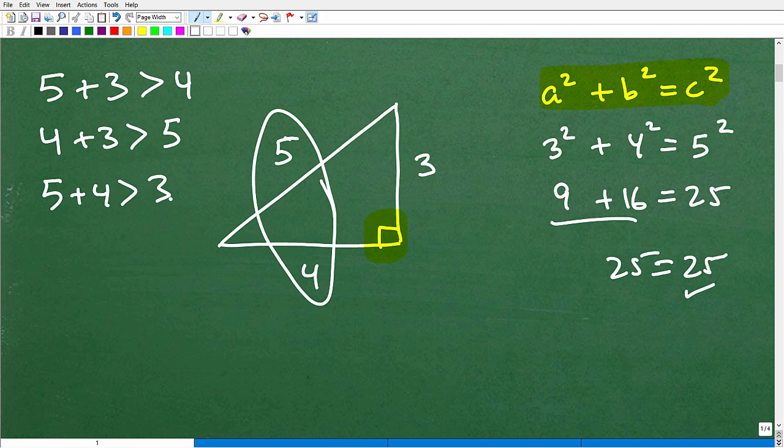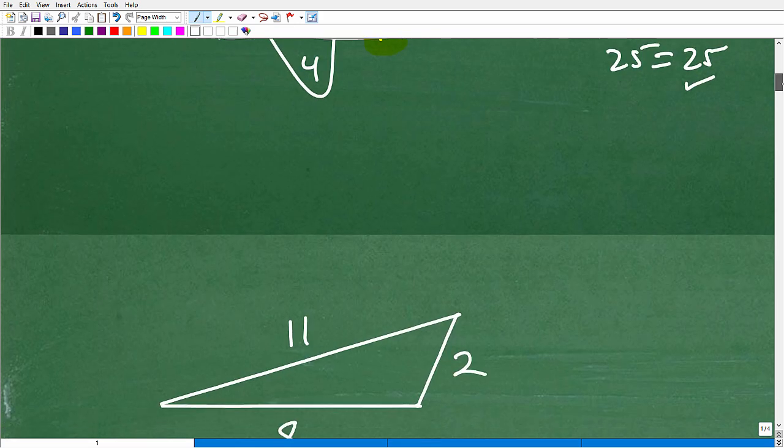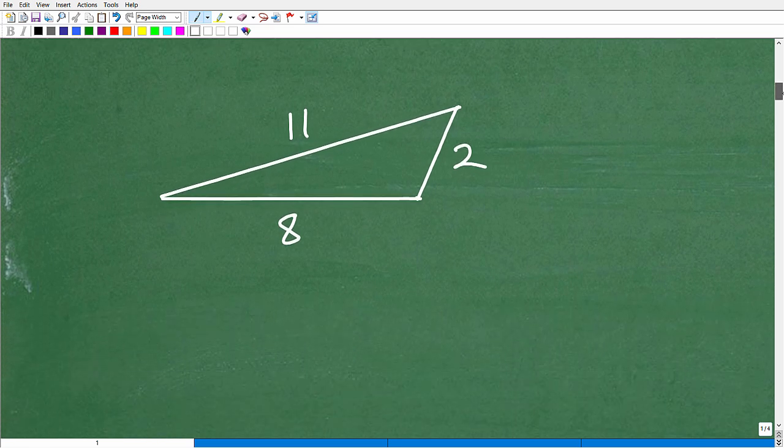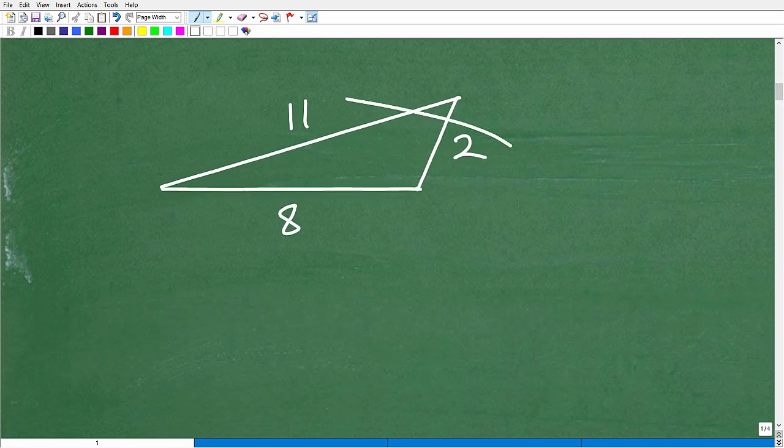So when you have a triangle, an actual triangle, whatever the lengths are, doesn't even have to be a right triangle. So the triangle inequality theorem follows: any two sides, when the sum of any two sides is always going to be greater than that last remaining side. So now, knowing that, we can go ahead and see why this is impossible. All right, let's go ahead and start off. Here we go.